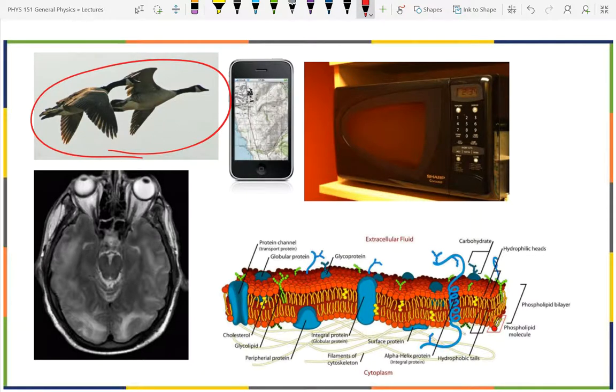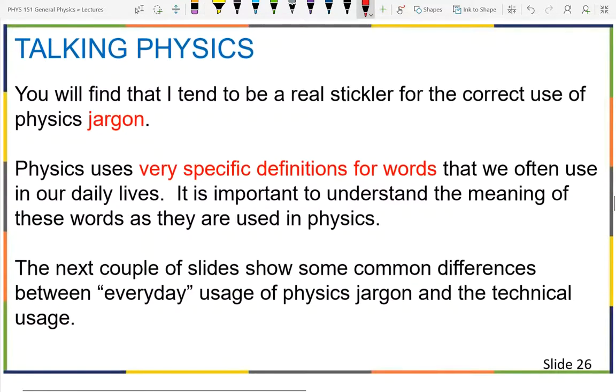As we study physics, we're going to learn some words. There's some words that we use in everyday life, like work. Everybody knows the word work. In physics, we're going to talk about work, and we're going to have a very specific meaning. Some words we're going to use you're familiar with, but not familiar with the specific meaning we're going to use in physics. I'm going to try to be careful to identify words and define them so you know what we mean when we use them in physics class.